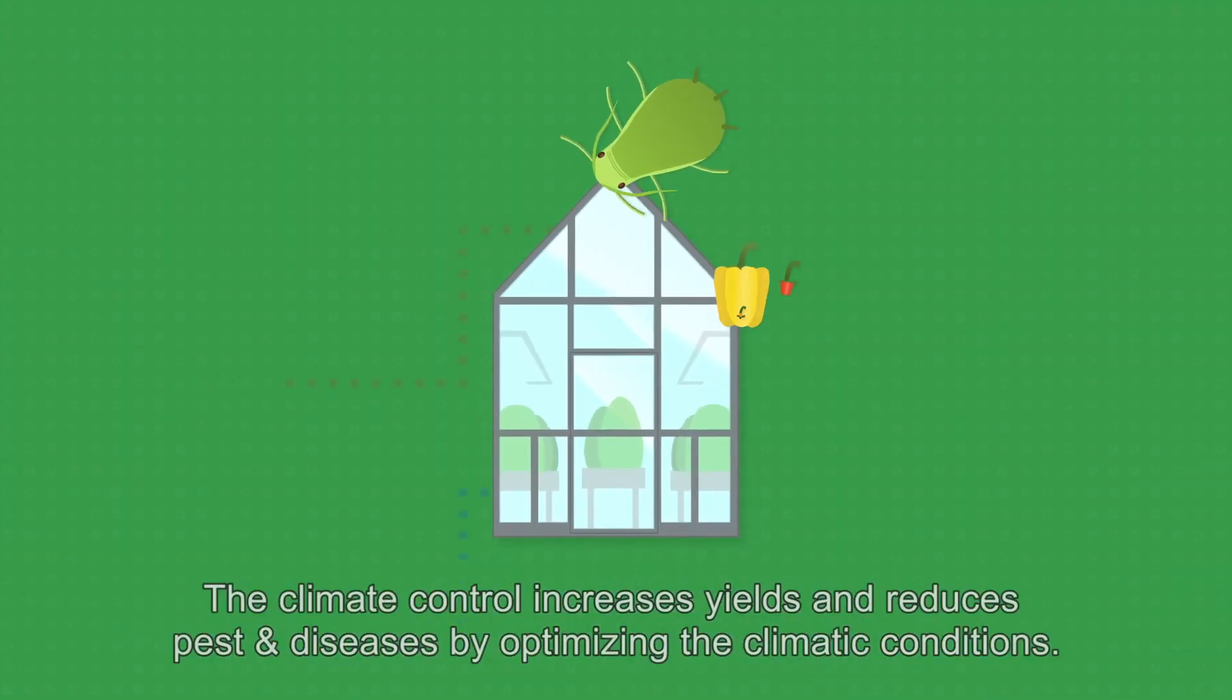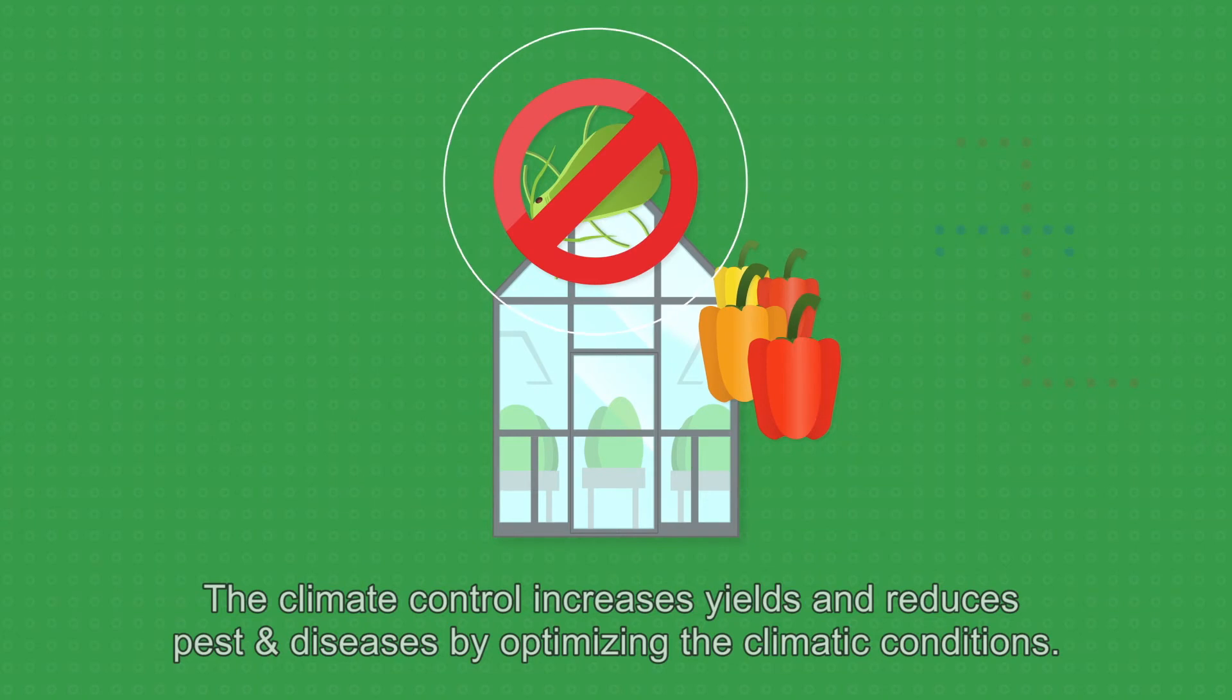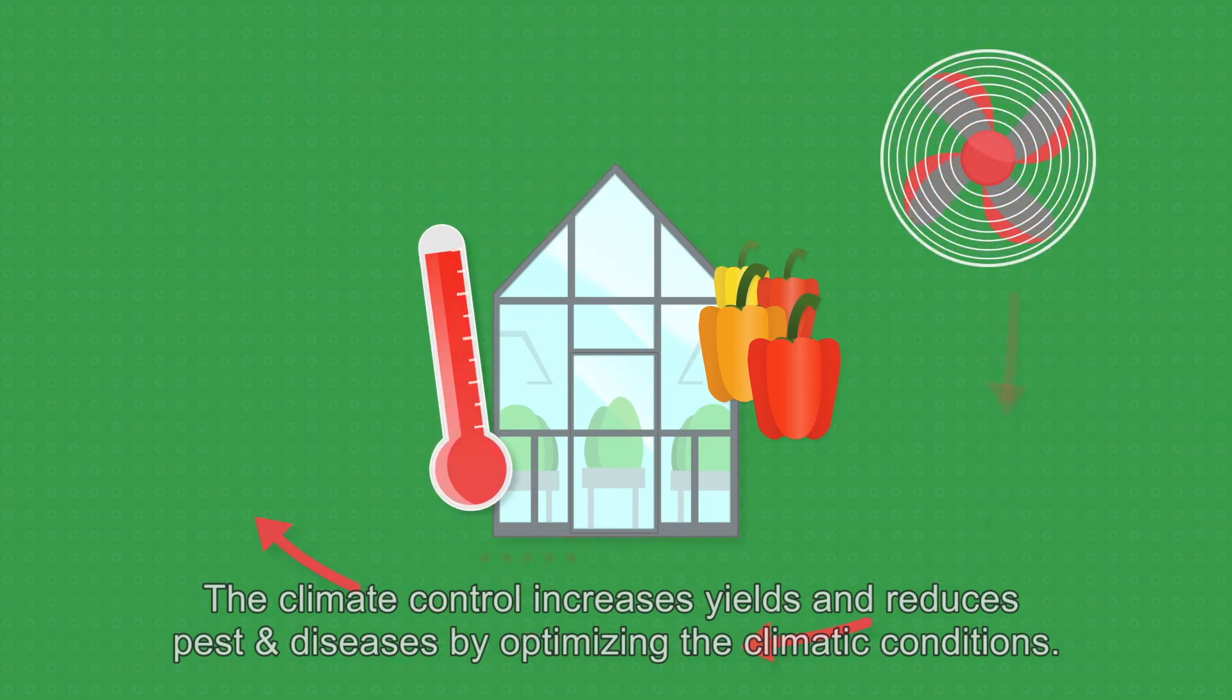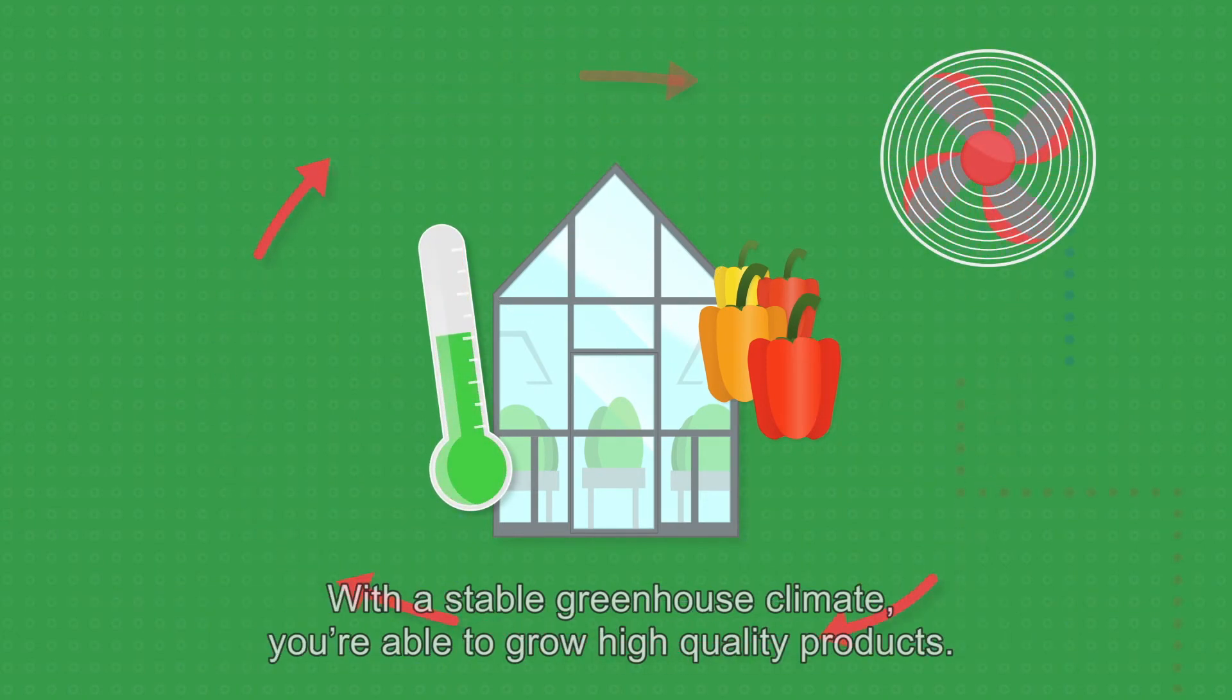The climate control increases yield and reduces pests and diseases by optimising the climatic conditions. With a stable greenhouse climate, you're able to grow high-quality products.